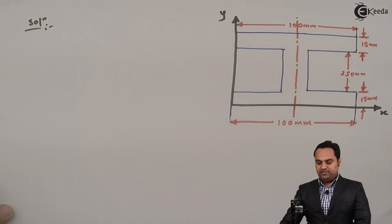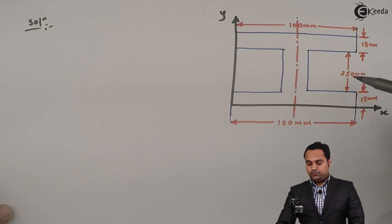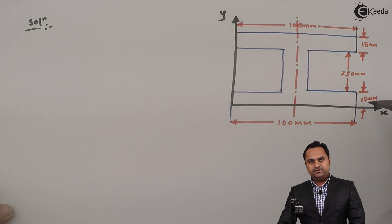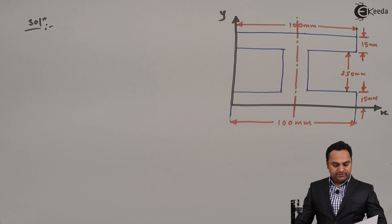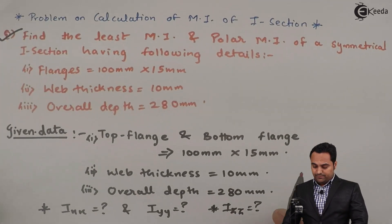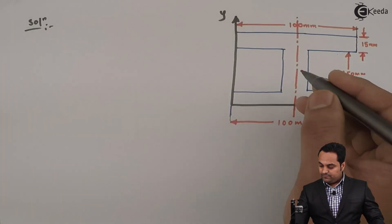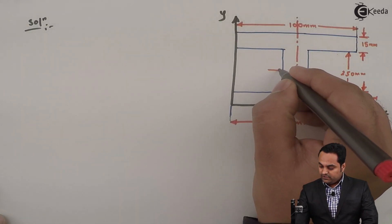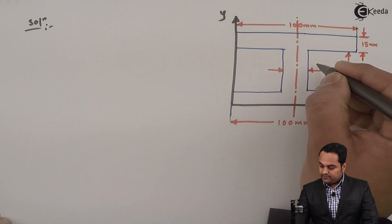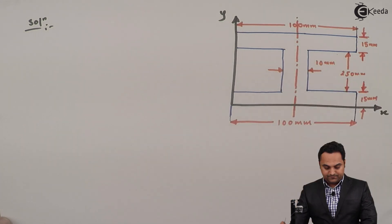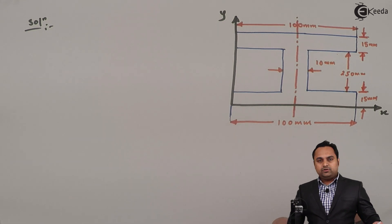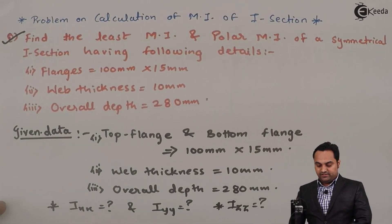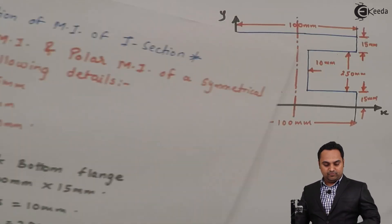The overall depth is 280 mm: 250 plus 15 plus 15. The web thickness is given as 10 mm. After marking all the dimensions, the question is to find the MI, that is moment of inertia.